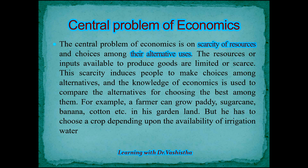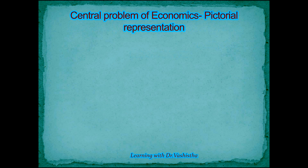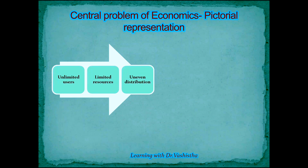Economics helps us make the best choices among limited alternatives. For example, in India being an agrarian economy, consider a farmer who can grow several things on his field — paddy, sugarcane, banana, or cotton — but he has to choose a crop depending on the availability of irrigation water. This illustrates how limited resources force us into choice-making, which is the central problem of economics.